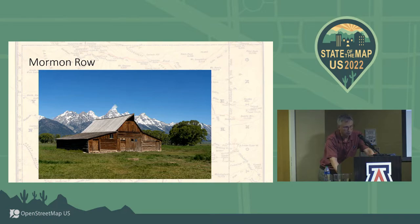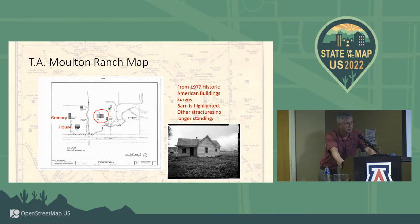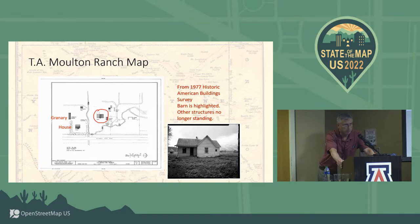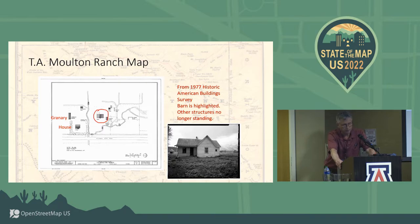However, there are some other buildings on the TA Moulton Ranch that are no longer standing — so how do we go about adding those? One way is to find old maps. This particular map of the ranch is from a Historic American Buildings Survey commissioned by the National Park Service, with the survey done in 1977. Other buildings photographed for that survey were in bad disrepair in 1977 and most are gone today except for the barn, which is circled. The house and granary are no longer standing. The cabin was built in 1912 and enlarged to the shape shown on the map.